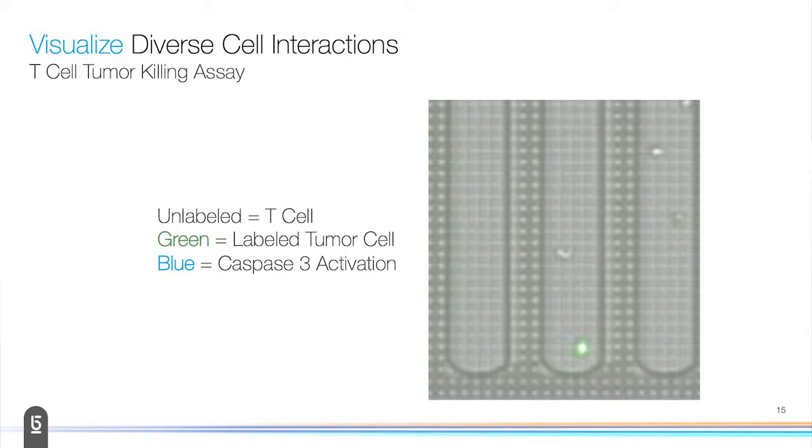I think what's really unique and interesting about the system is that we're imaging 3,500 of these nano pens at the same time, but you can actually drill down on one interaction and watch that T cell, in this case, dancing around that tumor cell. Here we've flipped the label, so the tumor cell is labeled in green, and when it activates caspase it turns blue. You can really watch that T cell as it's interacting with that tumor cell through time.